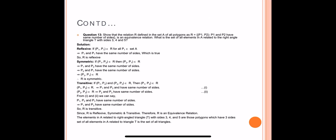For symmetric: if (P1, P2) belongs to R, then (P2, P1) belongs to R. (P1, P2) belongs to R means P1 and P2 have the same number of sides. Can we say P2 and P1 have the same number of sides? Yes. So (P2, P1) belongs to R, therefore R is symmetric.